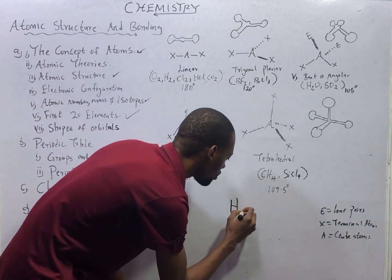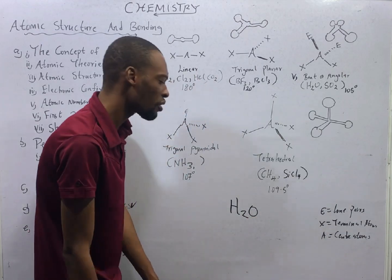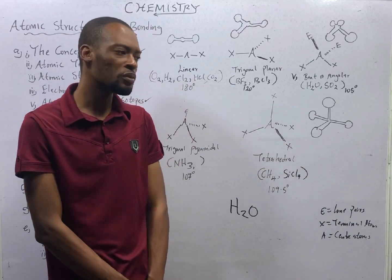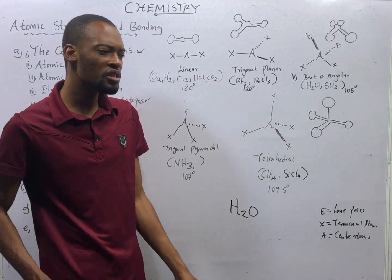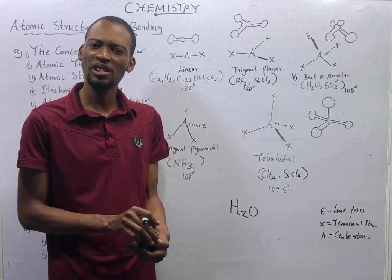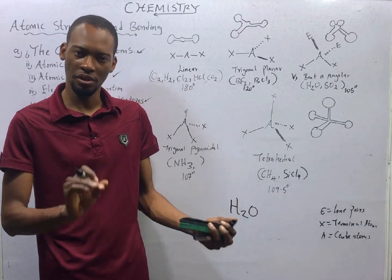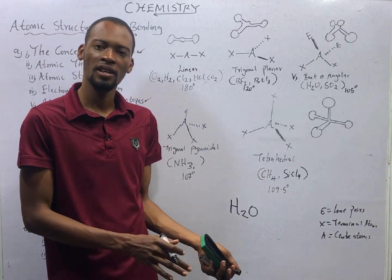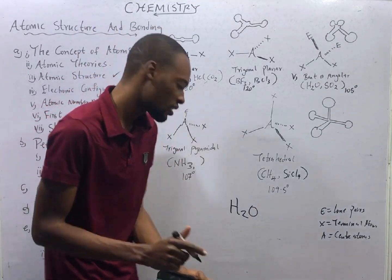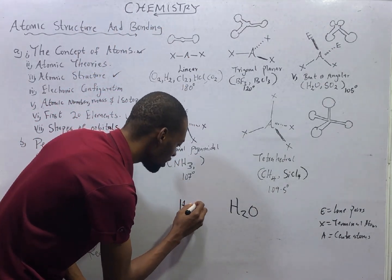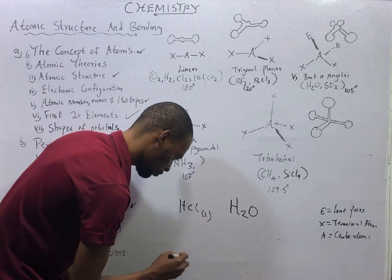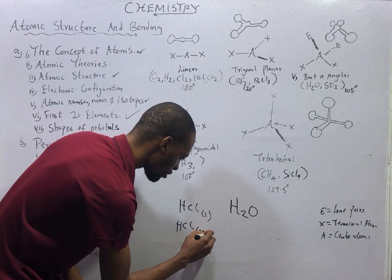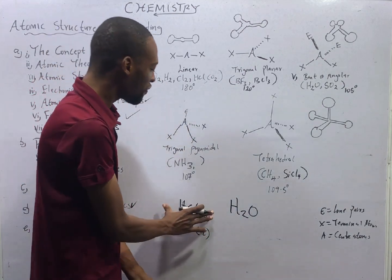H2O is a molecule of water because it is the smallest part of water that can exist on its own — that is a molecule. HCl is a molecule; it is the smallest part of hydrogen chloride that can exist on its own. When you dissolve hydrogen chloride in water, it will form hydrochloric acid. So HCl(L) and HCl(Aq) are entirely different.